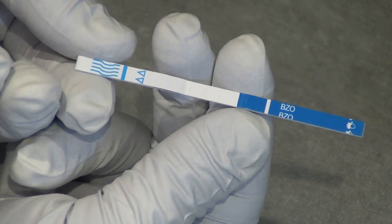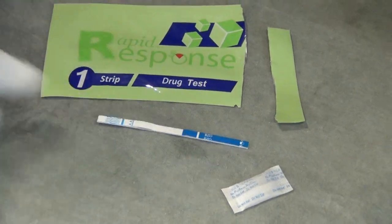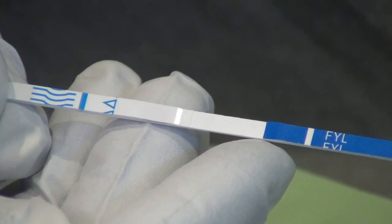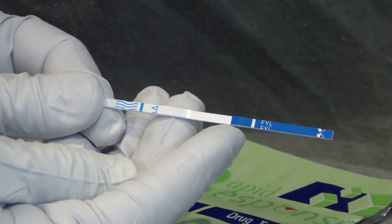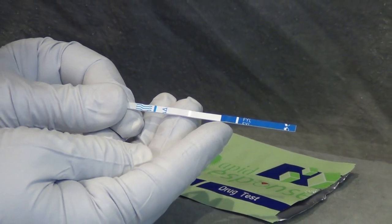One half is blue and helps confirm you have the correct testing strip by having a shorthand substance name such as FYL or BZO. The second half has blue squiggly lines indicating the part of the strip designed to come in contact with your fluid sample.